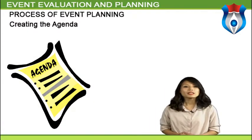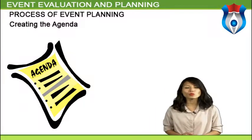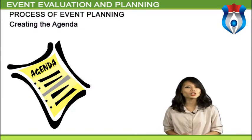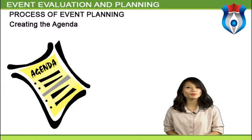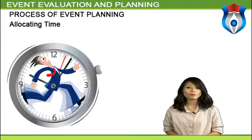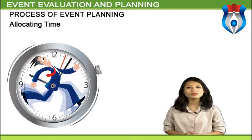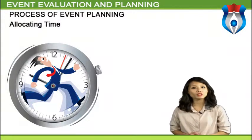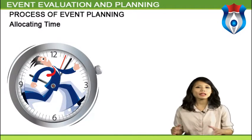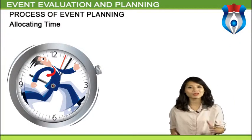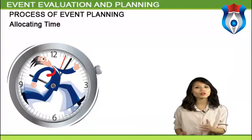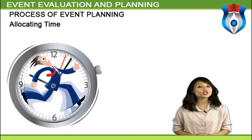Creating the agenda: deciding how to allocate time during an event is one of the most important elements of planning a good event. Keep the event's objective and target participants in mind when planning. Make sure to include sufficient time for every stage of the event, including meals and coffee or tea breaks. If participants need to move from one venue to another — from a sports field to a reception hall, for example — allocate sufficient time for transit.